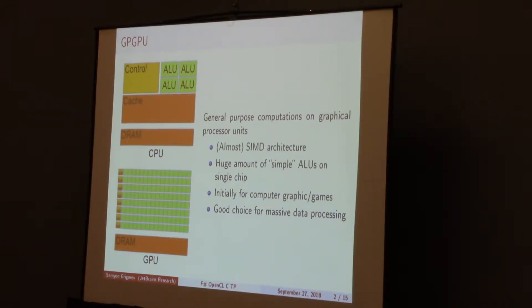Briefly about GPU. GPU, or graphics processing unit, is an implementation of single instruction multiple data architecture. The main feature is that GPU contains a huge number of computational cores. So it may be useful to use graphics processing units not only for graphics processing, but also for huge data processing in some cases.